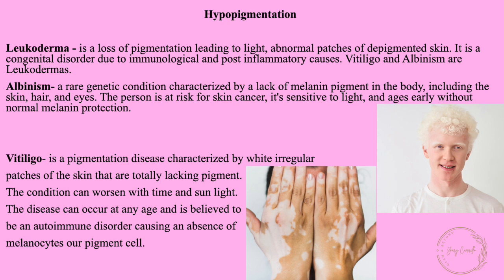Post-inflammatory erythema (PIE) is pink or red in color and is very common in Fitzpatrick scale one through three. Hypopigmentation includes leucoderma — a loss of pigmentation leading to light, abnormal patches of depigmented skin. It is a congenital disorder due to immunological and post-inflammatory causes. Vitiligo and albinism are forms of leucoderma. Albinism is a rare genetic condition characterized by a lack of melanin pigment in the body including the skin, hair, and eyes. Affected individuals are at risk of skin cancer, are sensitive to light, and age early without normal melanin protection.